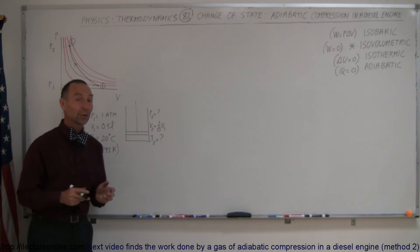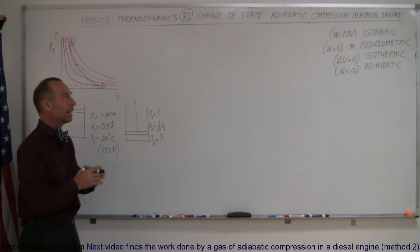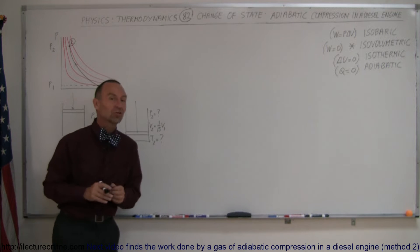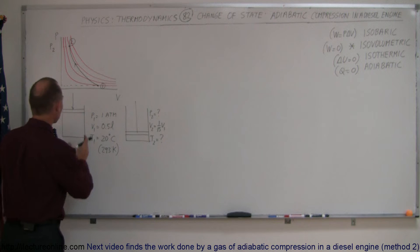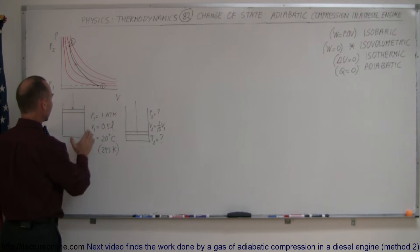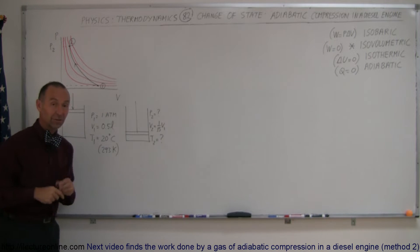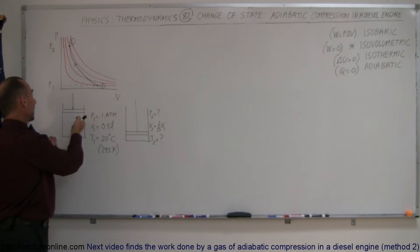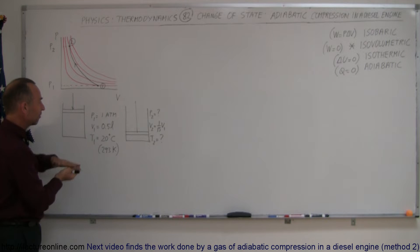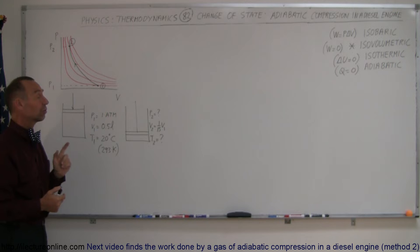Welcome to Electron Online. Here we're going to do a good example of how to calculate the work done in an adiabatic process — in this case, a compression in a diesel engine. This is a cylinder in a diesel engine. It starts out with an initial volume of half a liter, at atmospheric pressure and temperature 20 degrees centigrade. The valve is opened, air is taken in at atmospheric pressure, then the valve is closed, the piston comes down, and the volume is compressed to 1/15th of its original volume.